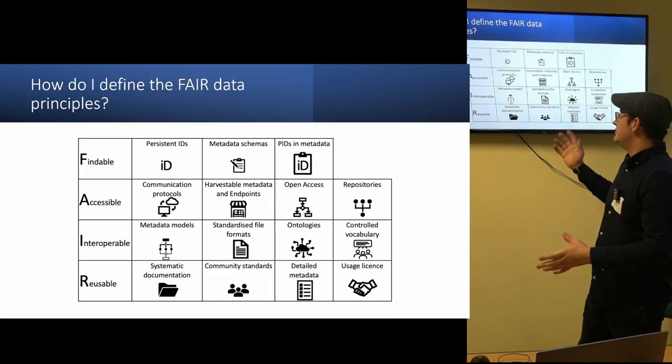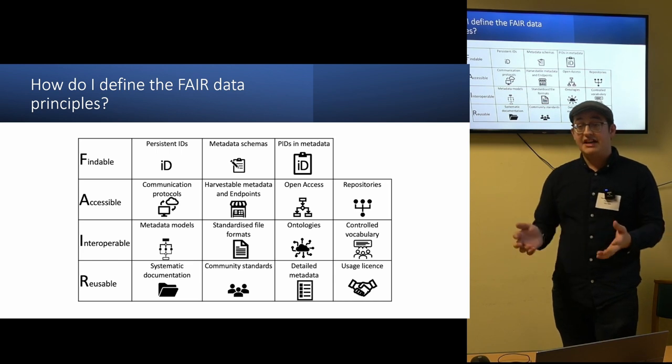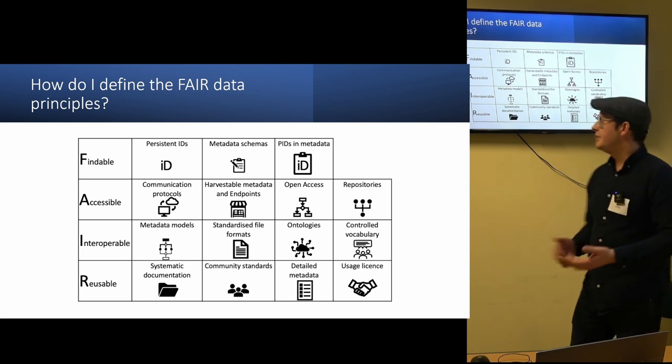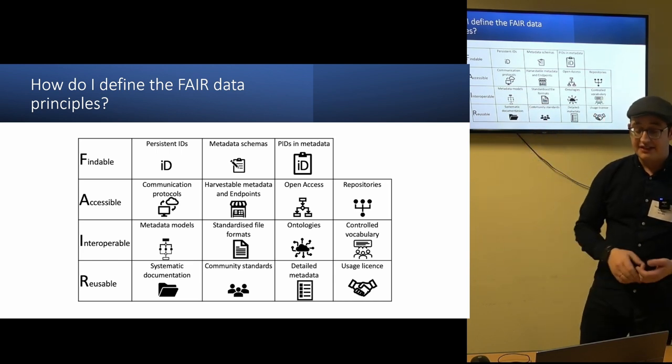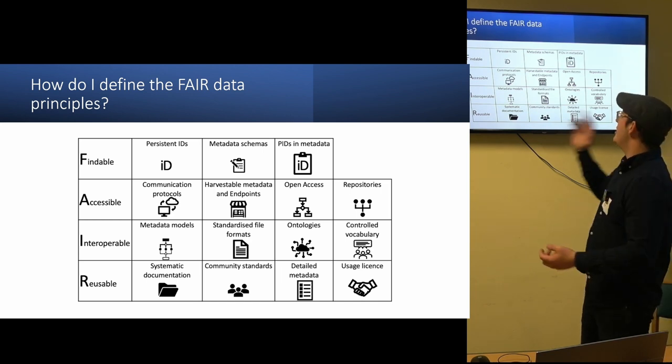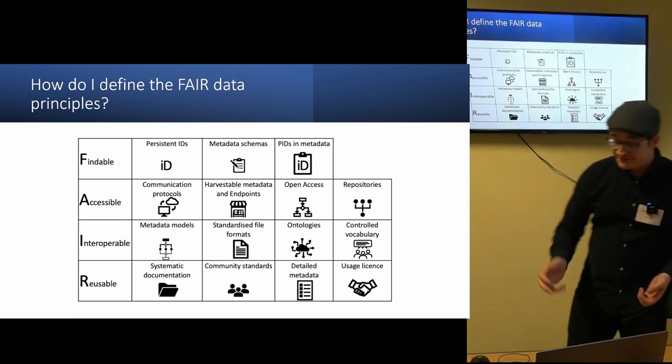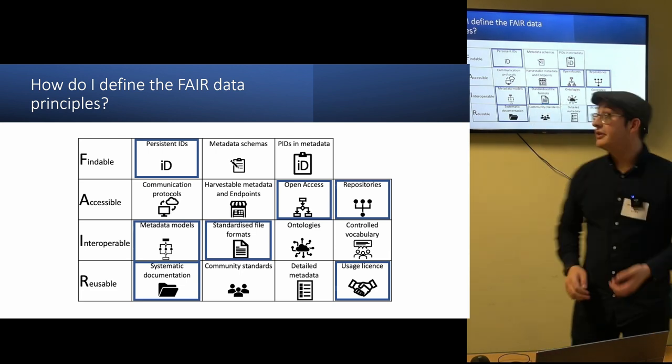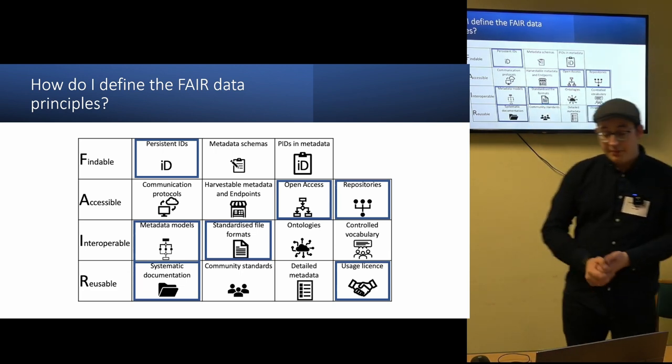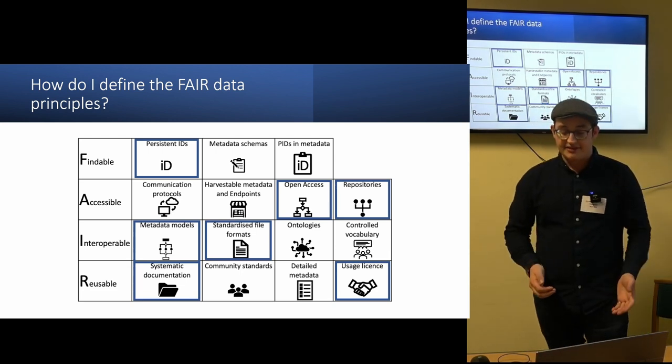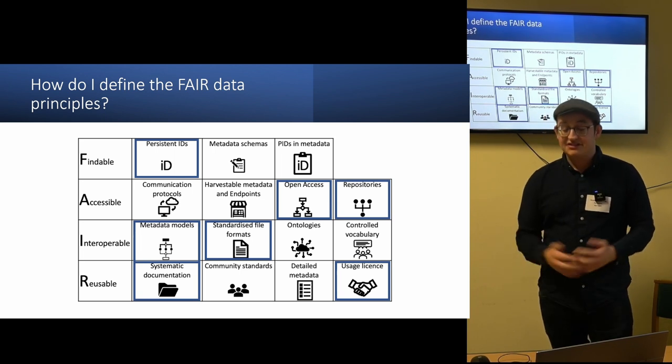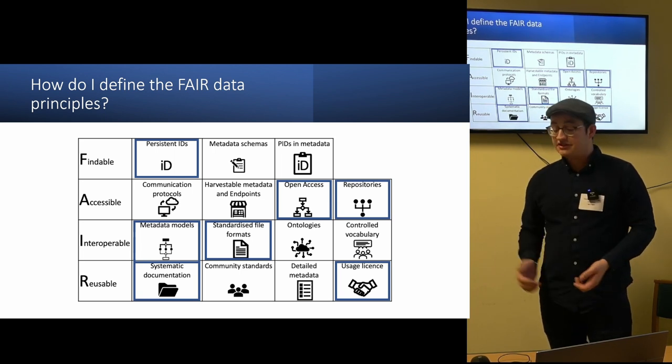So I'm sure that most of us have come across the FAIR data principles in the past. But for me, it's about making data findable, accessible, interoperable, and reusable. And there are many different ways in which this can be achieved. But today I'm going to be talking about persistent identifiers, open access repositories, metadata models, file formats, systematic documentation, and also usage license.